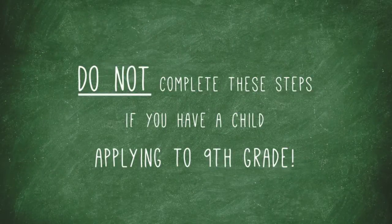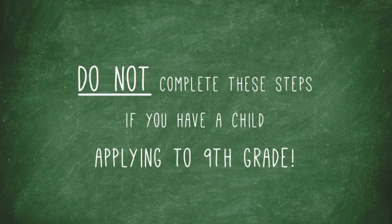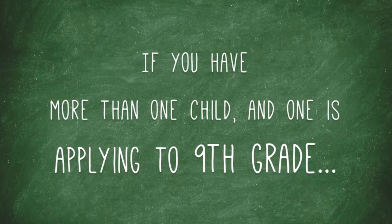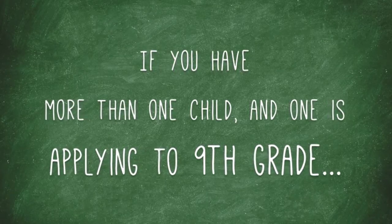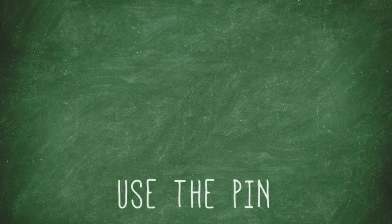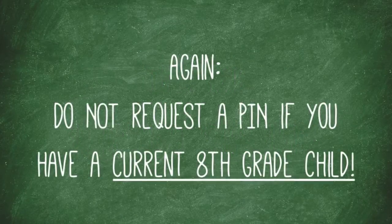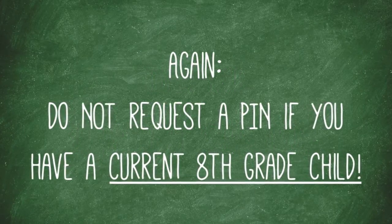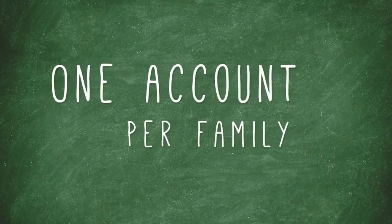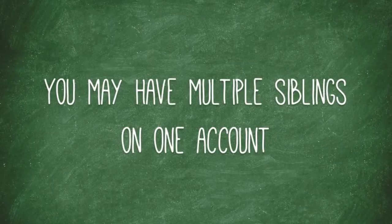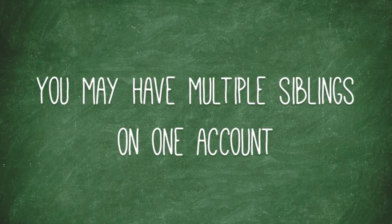These steps are for parents whose children do not currently have a brother or sister in 8th grade applying to 9th. If you have more than one child and one is a current 8th grader, be sure to activate your account with the PIN on your 8th grader's eligibility letter, and then add their younger siblings to the account. Do not request a PIN if you have a current 8th grade child. There should only be one online account per family. You may have multiple children on one account.